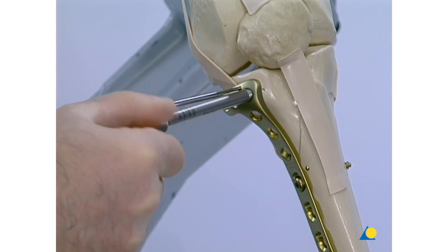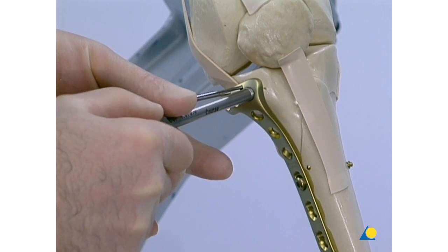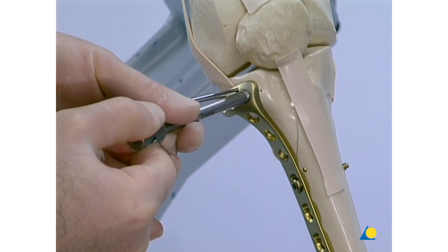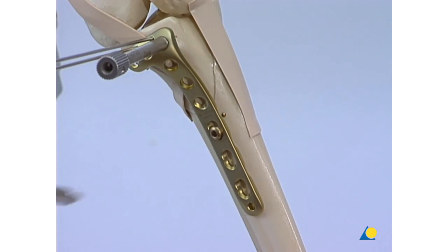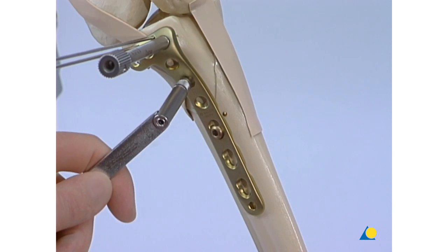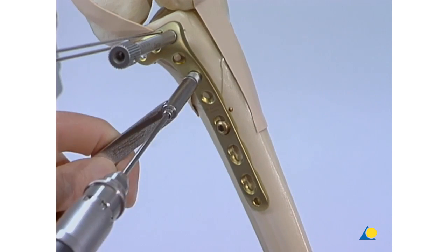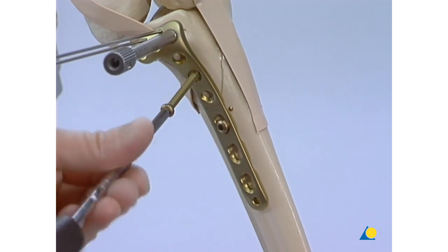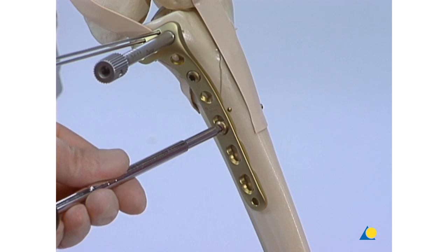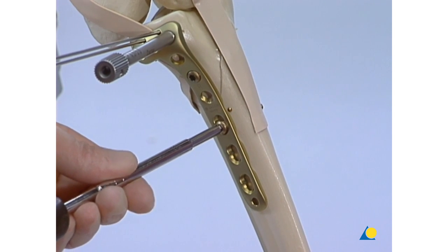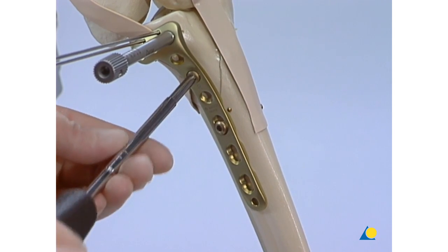The 5.0 threaded LCP drill sleeve is screwed into the most anterior of the proximal plate holes. This drill sleeve will show the direction of the most proximal locking head screw. The plate is secured to the bone proximally by using a 4.5 millimeter cortex screw. The two cortex screws are tightened sequentially to maximize the buttress effect.